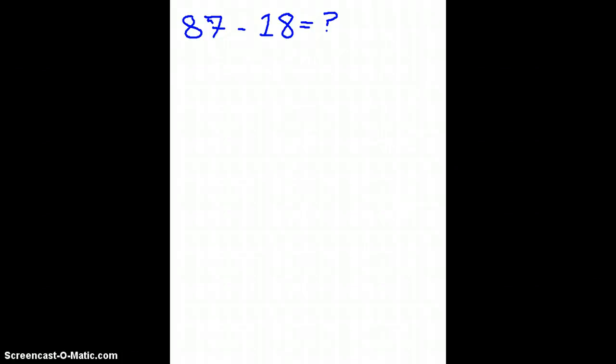Alright, if you want to use the mental math strategy that we've been using to solve a problem like 87 minus 18, you would start by choosing one of the two numbers.